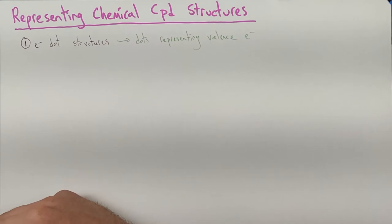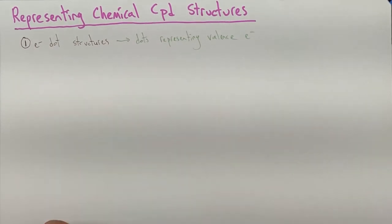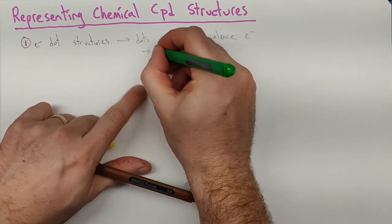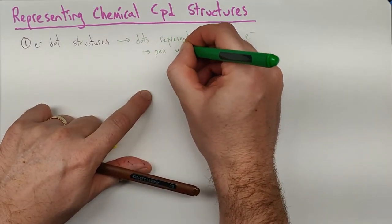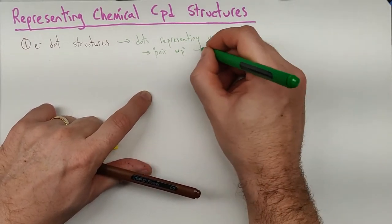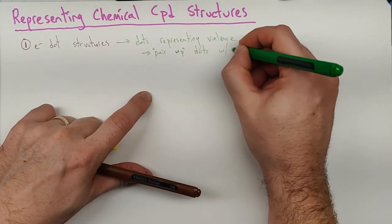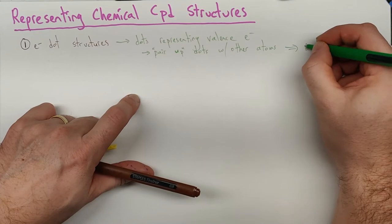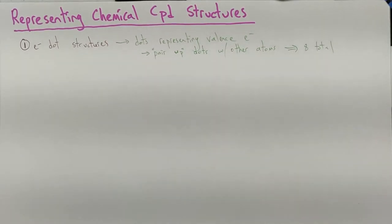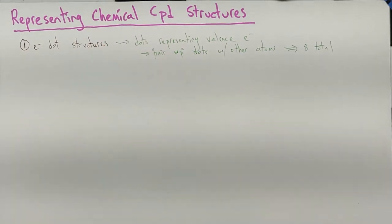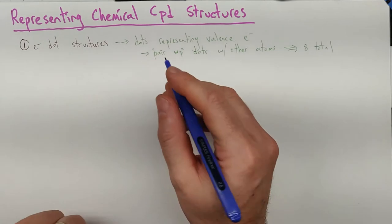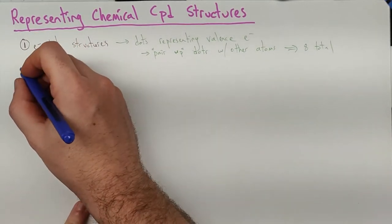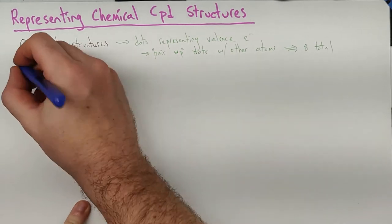We're going to pair up dots, we're going to share them, and our goal is eight dots. So we're going to pair up our dots with other atoms to get eight total. I'm going to leave a little room here because I'm going to jump right into Lewis structures. Everything you do is going to end up at least starting with Lewis structures. Electron dot is kind of just a stop along the way.